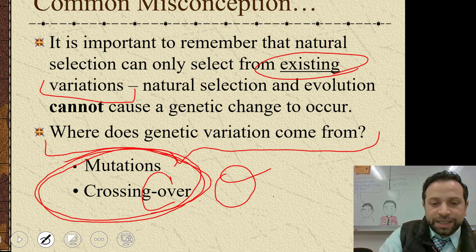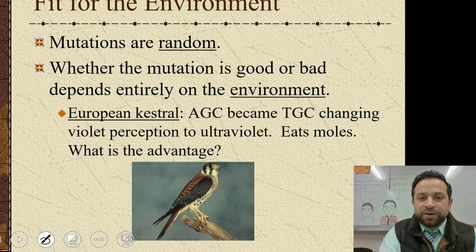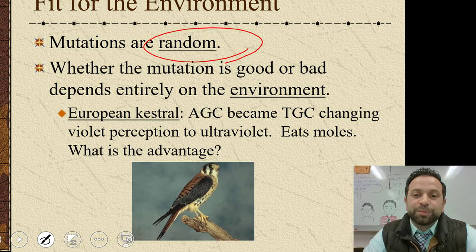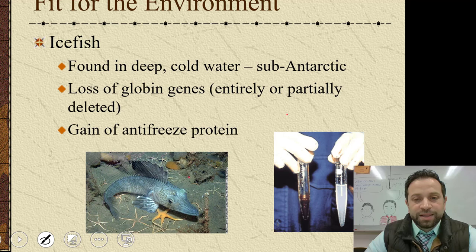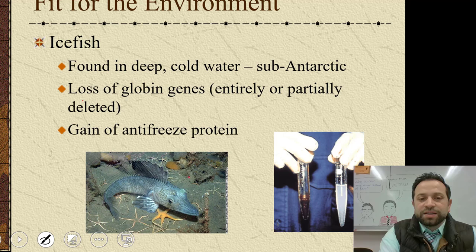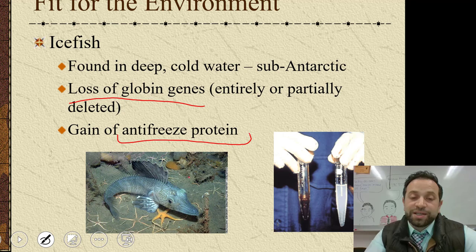Remember that mutations are random. Are mutations good or are they bad? Hopefully you remember: it depends completely on the environment. Here's an example — ice fish are found in deep cold waters and they have a loss of a globin gene, which means it's entirely or partially deleted. This helps them gain an antifreeze protein, which means they actually can't freeze in super cold and frozen waters.